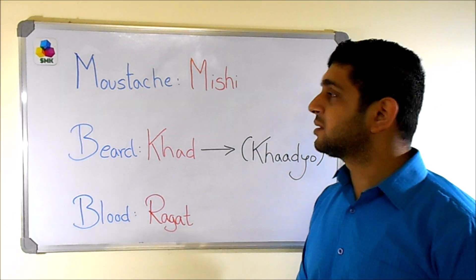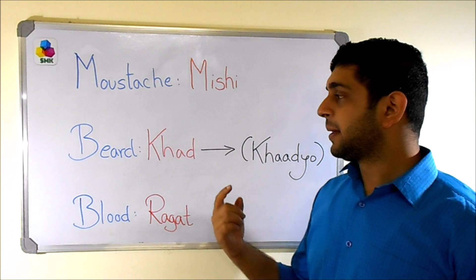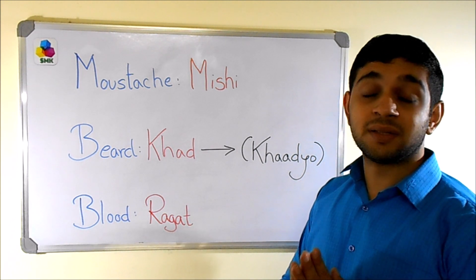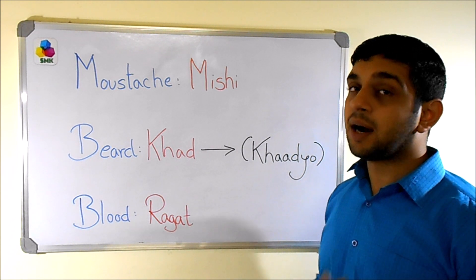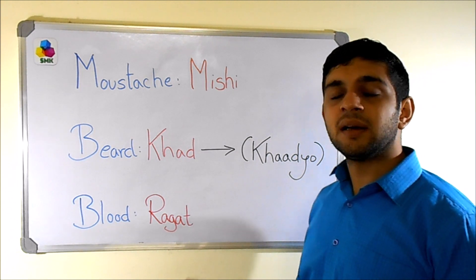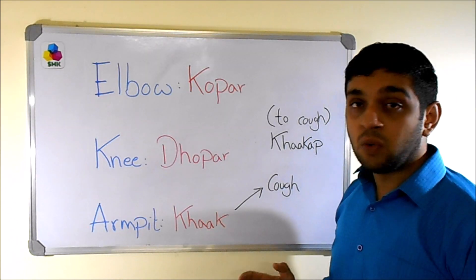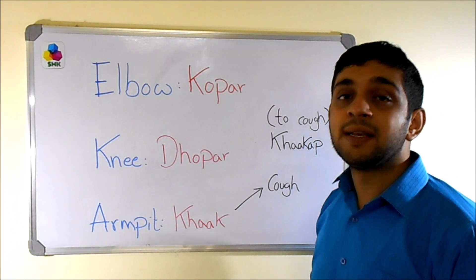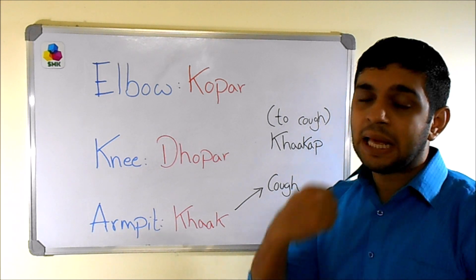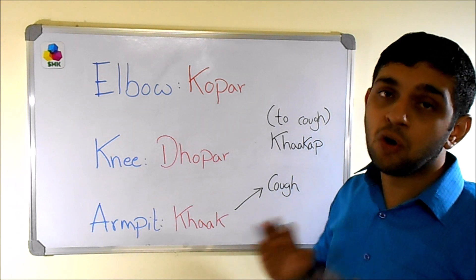To recap: moustache is 'mishi', beard is 'khad', a person having a beard is 'khadiyo', and blood is 'ragat'. Elbow is 'koper'. Knee is 'dhopar'.